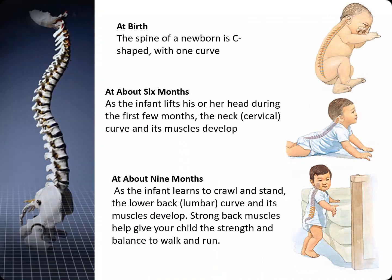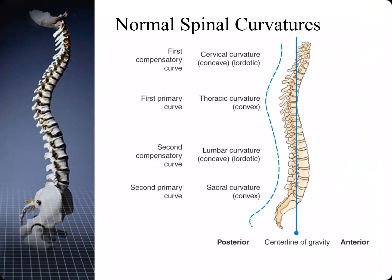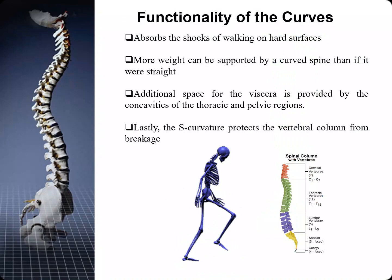When we are born, we only have one curve to our spine — sort of a C. At about six months, as the infant starts to lift its head, the cervical curve and its muscles develop. At about nine months, as the infant learns to crawl and stand, the lower back or lumbar curve and its muscles start to develop. This graphic represents the normal spinal curvatures of an adult, and the functionality of the curves helps us in walking, standing, crawling, jumping, and running.